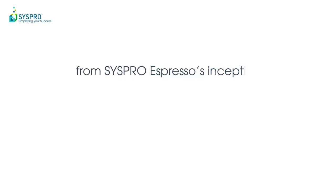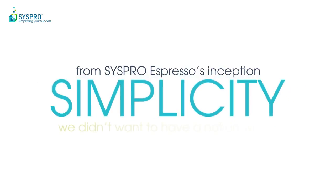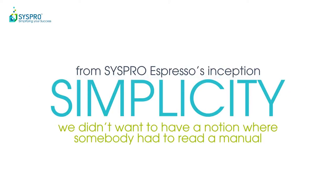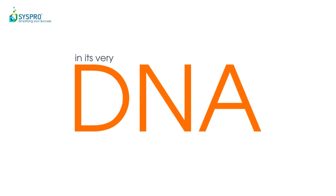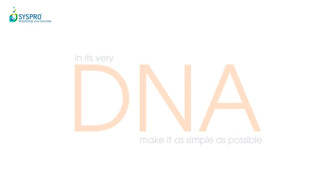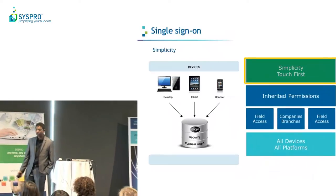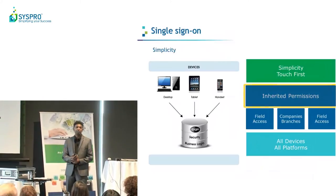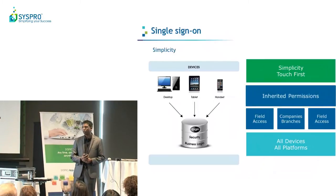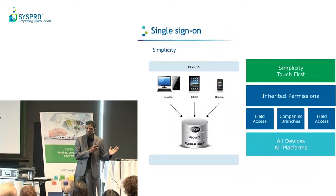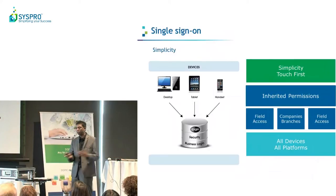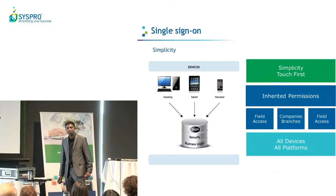From SysPro Espresso's very inception, the simple thing we had in mind is simplicity. We didn't want someone to have to read a manual. In its very DNA, we tried to make it as simple as possible. We built Espresso from the beginning for touch first — it does work with the mouse, but we built it touch-first. We have this notion of inherited permissions. If a particular user is not allowed access to warehouse FG or branch 10, on the mobile device he will have no access to that. The security you set up in SysPro will automatically propagate and inherit itself to your mobile device.